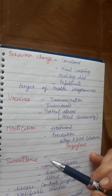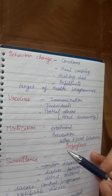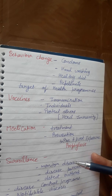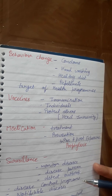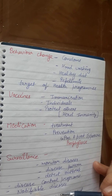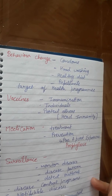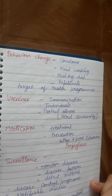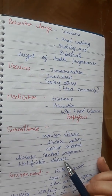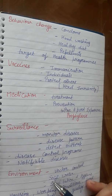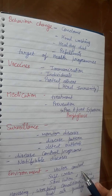Surveillance is also important for controlling infectious diseases. We monitor diseases through continuous scrutiny of factors so that disease patterns and any outbreaks can be detected. Disease control programs mainly focus on surveillance, and many countries prioritize notifiable diseases such as cholera, yellow fever, and plague.